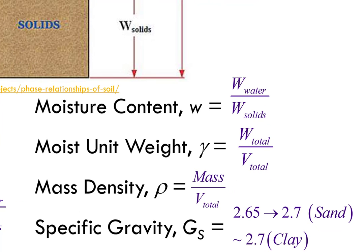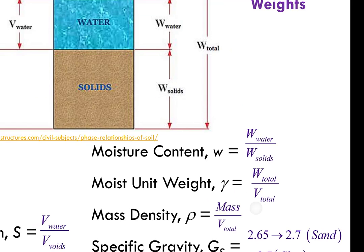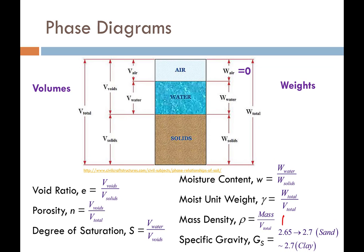Mass density is the total mass of the soil divided by the total volume. The specific gravity of the soil is the mass of the soil divided by the mass of water. For soils, specific gravity typically ranges from 2.65 to 2.7 for sands, and 2.7 to 2.8 for clays. So even if we know nothing else about the soil, we can estimate specific gravity and be really close.